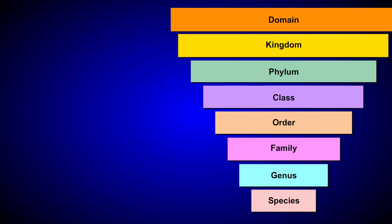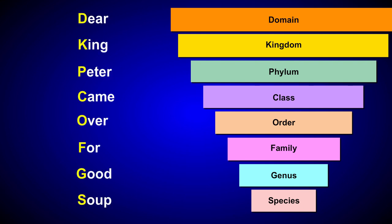There are a lot of useful memory tricks for learning the classifications of life. Here's a simple mnemonic that may help you memorize the first letter of each level: Dear King Peter came over for good soup.